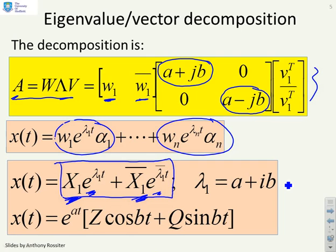After a little bit of algebra, which I'm not going to do because it's straightforward, I can extract the real bit of the exponential, the e to the at. I can see that what's inside is going to be some vector Z times cosine bt, some vector Q times sine bt, and the key thing is this is real. I've captured the exponential decay in the e to the at part and I've captured the oscillation in the cosine and the sine part.